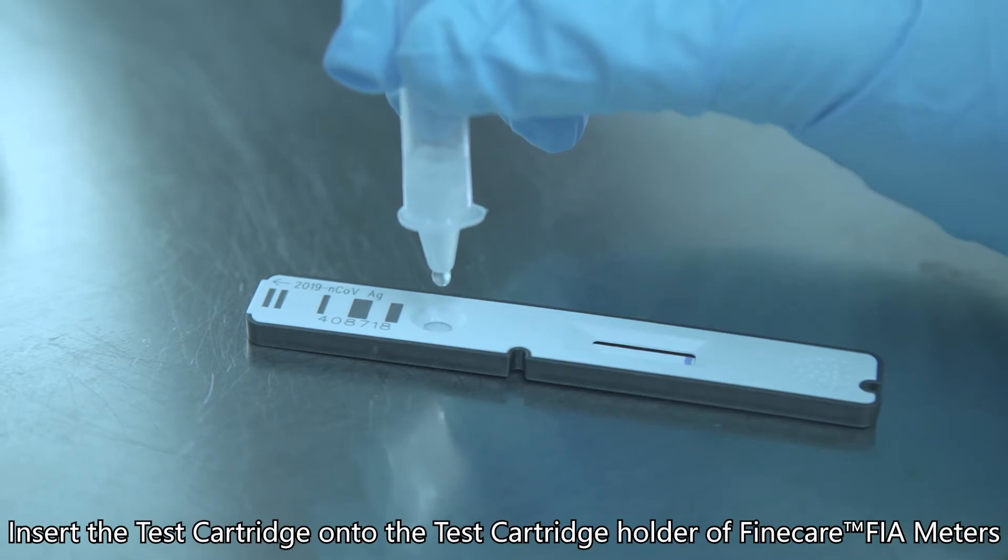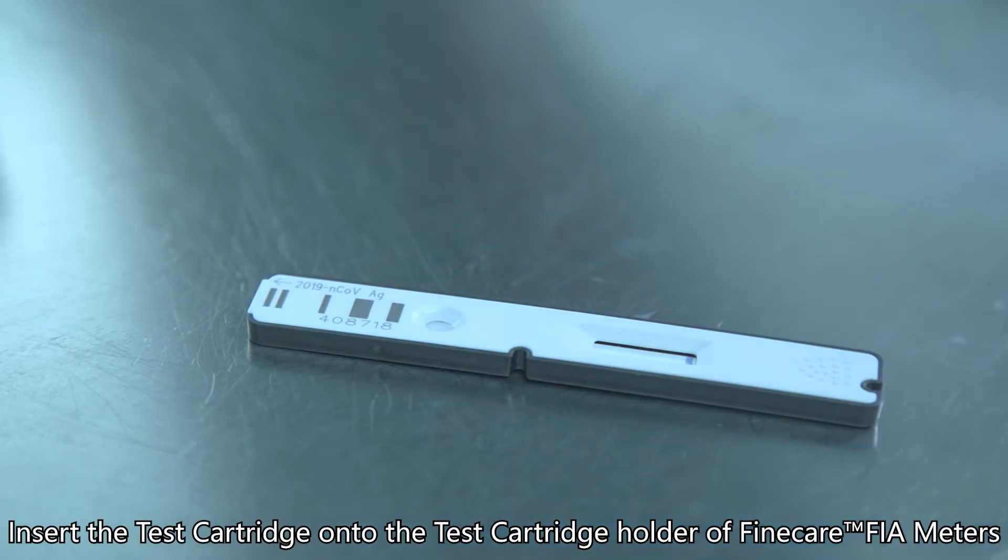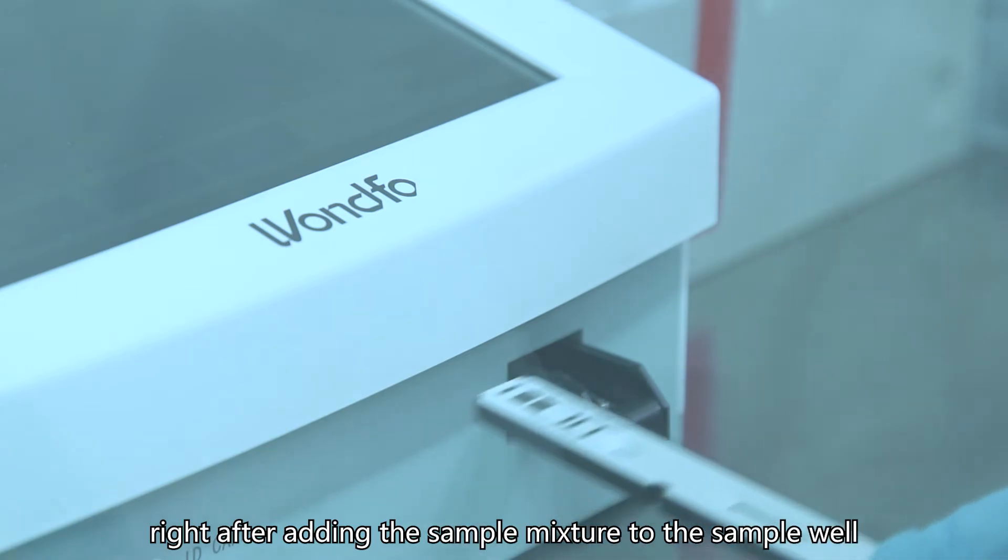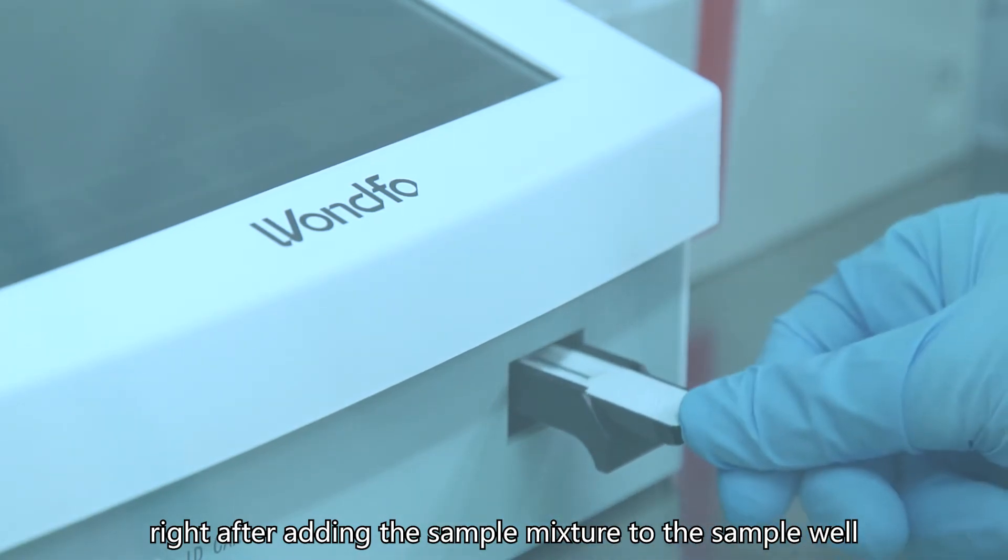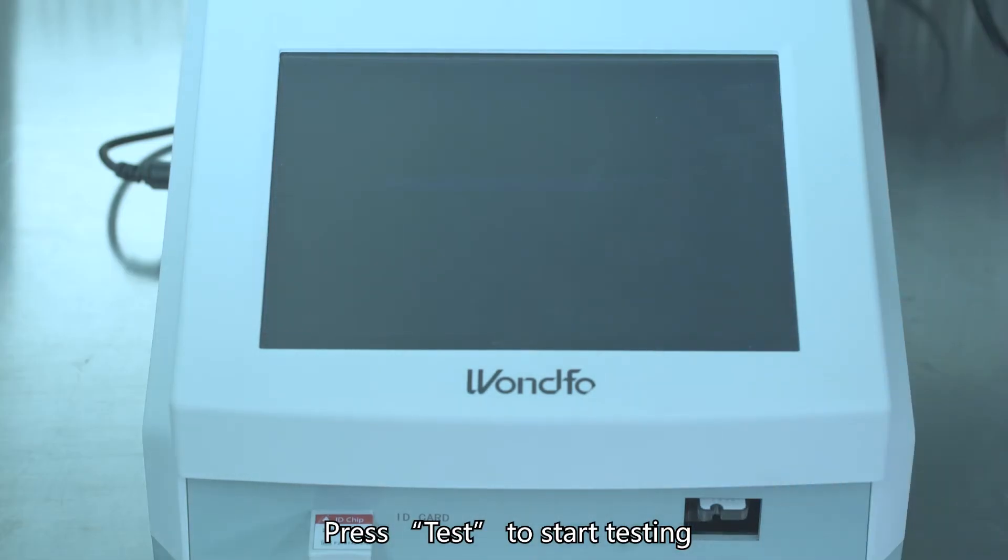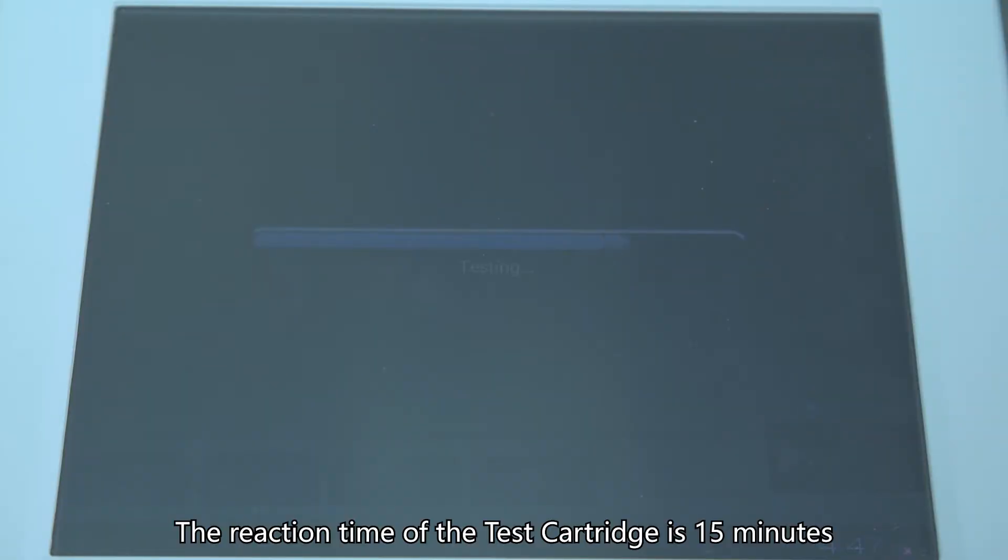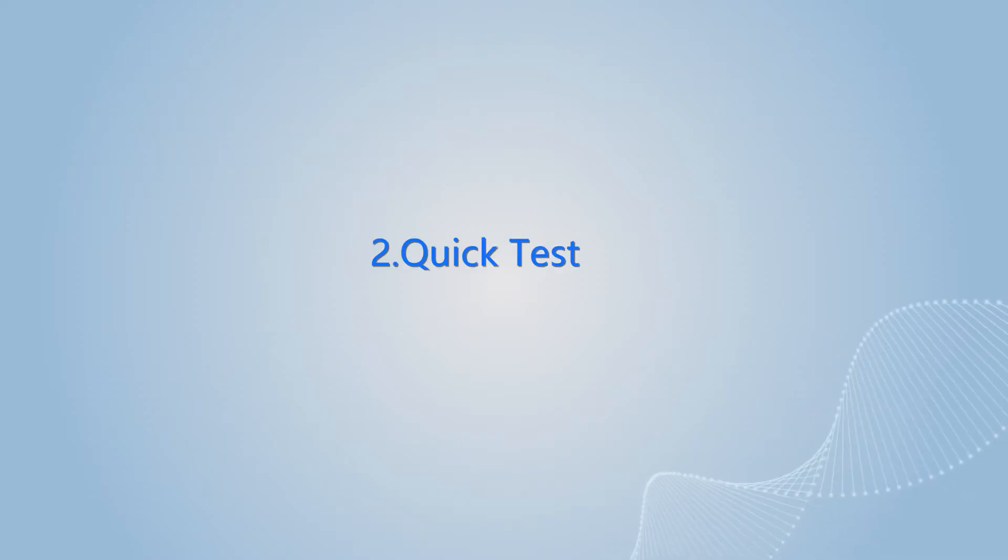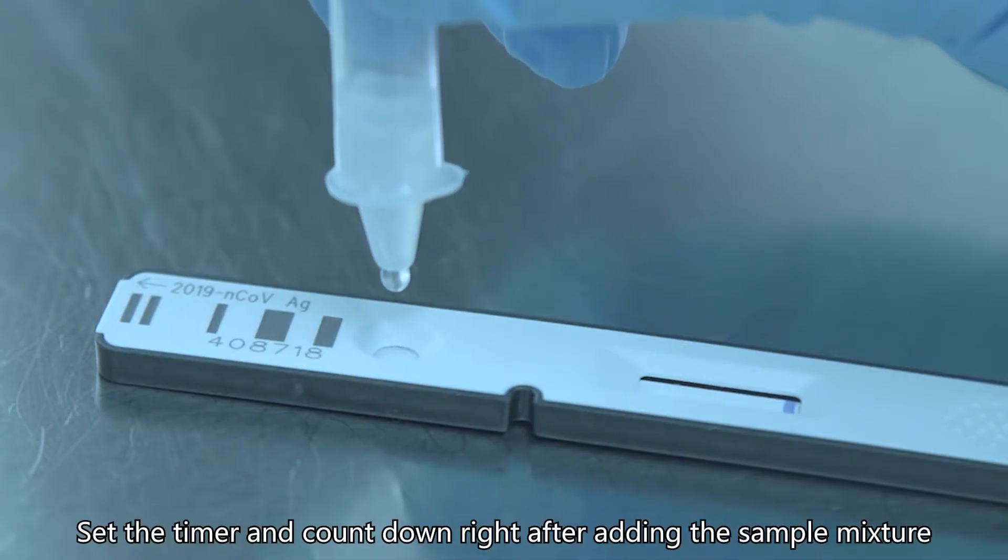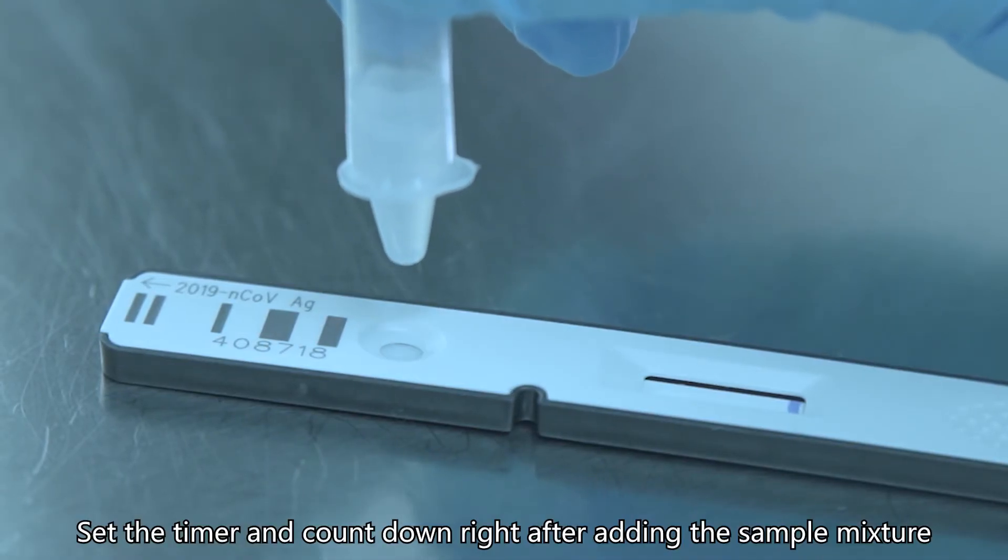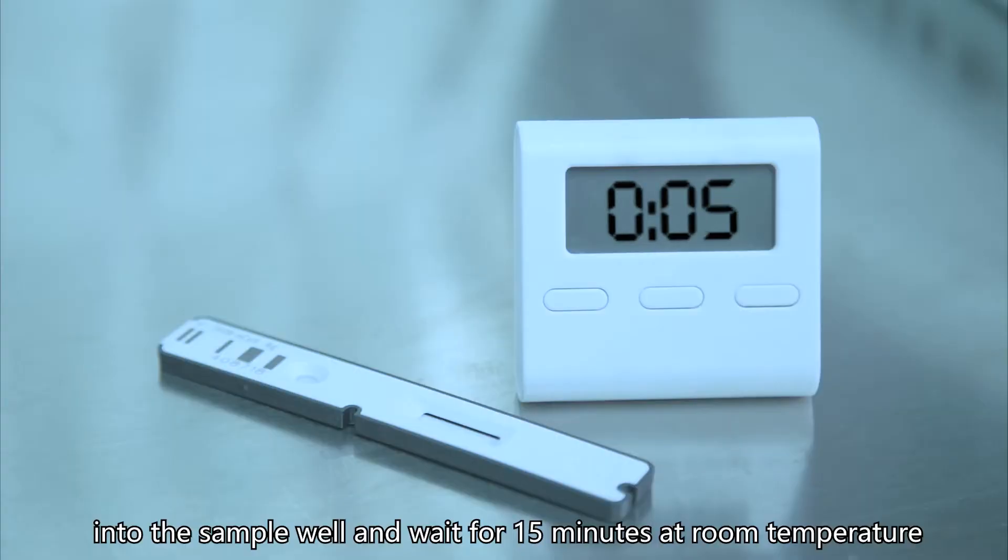Insert the test cartridge onto the test cartridge holder of the FineCore F5 meter right after adding the sample mixture to the sample well. Press test to start testing. After the test is completed, the results will be displayed on the screen.